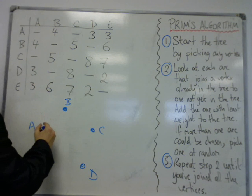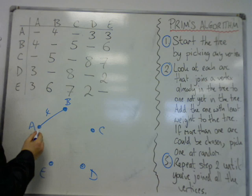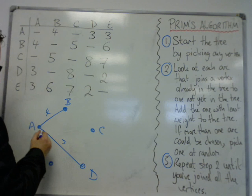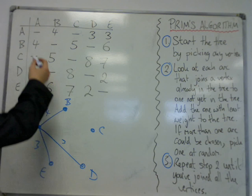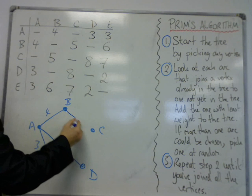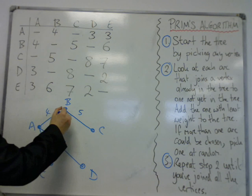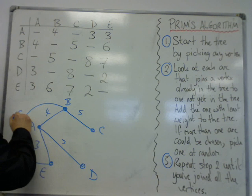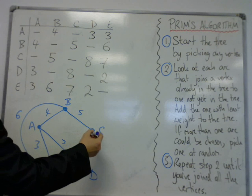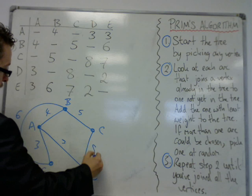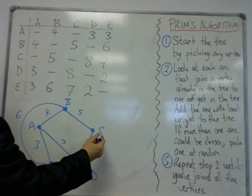A is connected to B by an edge of 4, to D by an edge of 3, and E by an edge of 3. And then B is connected to C by an edge of 5, and it's also connected to E with an edge of 6. And then C is connected to D by an edge of 8, and connected to E with an edge of 7.